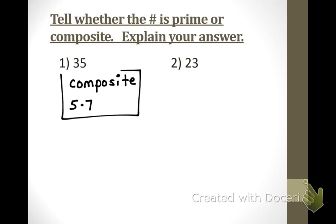Another factor of 35 is 1 times 35, but could you tell me 1 times 35 to explain that something's composite? No. Why not? Because it's always 1 times itself. Whenever you say 1 times itself, that makes me think the answer is prime. So make sure when you're telling me it's composite that you give me something other than 1 and itself. Excellent job, Carlos.